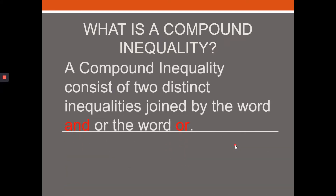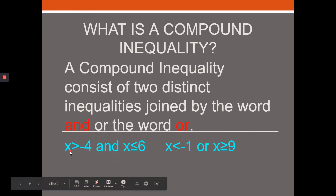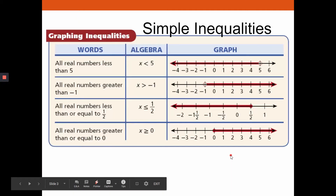Compound inequalities consist of two distinct inequalities joined by the word 'and' or the word 'or.' With an AND statement, both conditions have to be met — for example, x greater than negative four AND less than negative six is more restrictive. OR statements are more inclusive — all numbers less than negative one OR greater than or equal to nine both get included.